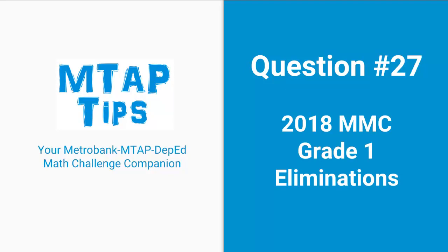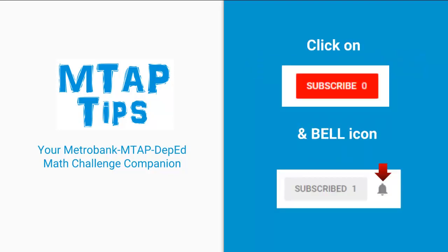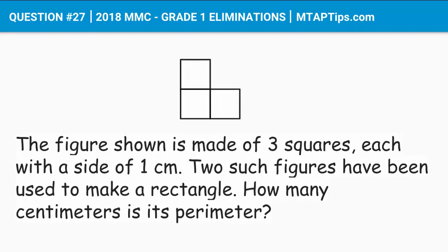Question number 27 for the 2018 MMC Grade 1 Eliminations. For more MTAP tips, don't forget to subscribe and click the bell icon for notifications. The figure shown is made of three squares, each with a side of one centimeter. Two such figures have been used to make a rectangle.